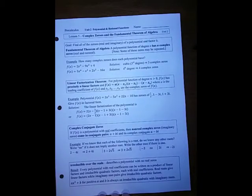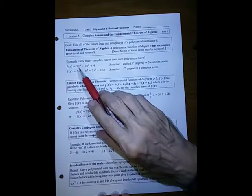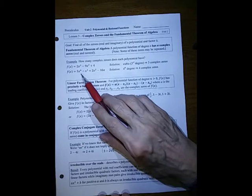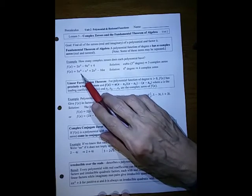Some of those can be repeated, meaning they can have a multiplicity of more than one, but there have to be a total of n zeros. So since this is third degree, it has to have three complex roots. Since this is fourth degree, it has to have four complex roots.